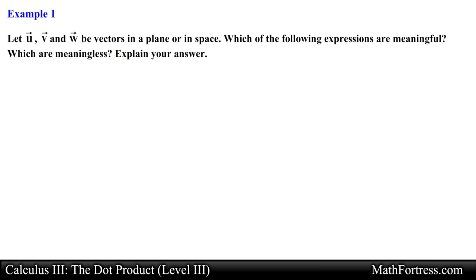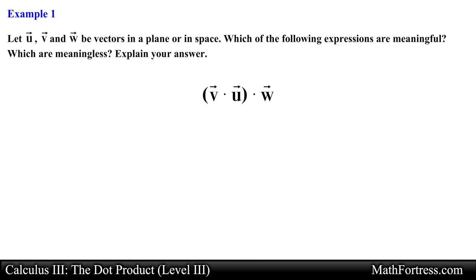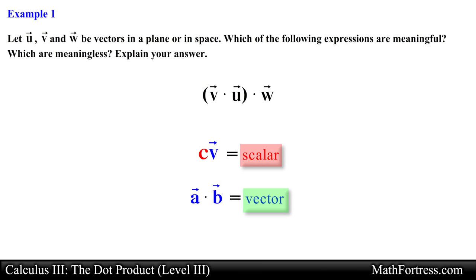Let u, v, and w be vectors in a plane or in space. Which of the following expressions are meaningful? Which are meaningless? Explain your answer. We need to determine if each expression has any meaning. We can determine this by remembering that scalar multiplication produces a vector and the dot product produces a scalar.